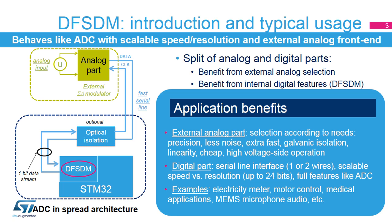The external analog part is usually a Sigma Delta modulator offered by a wide range of vendors. This offers the possibility to choose a specific analog part according to user needs, such as galvanic isolation for motor control or metering applications, low-noise and high-precision analog parts for sensor data acquisition, or inexpensive analog parts for price-sensitive applications. The analog part provides digitized data for the DF-SDM.